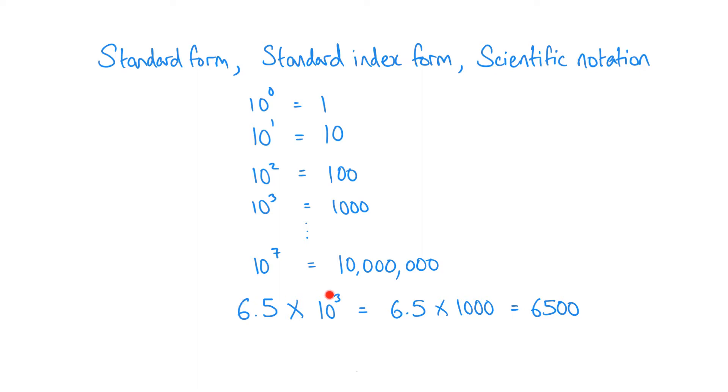Now this here is an example of a number that is in standard form, or standard index form, or scientific notation. They all mean the same thing. For a number to be in standard form, it has to look something like this: we need a number multiplied by 10 to a power. What's really important here is that the n must be an integer, so it has to be a whole number.